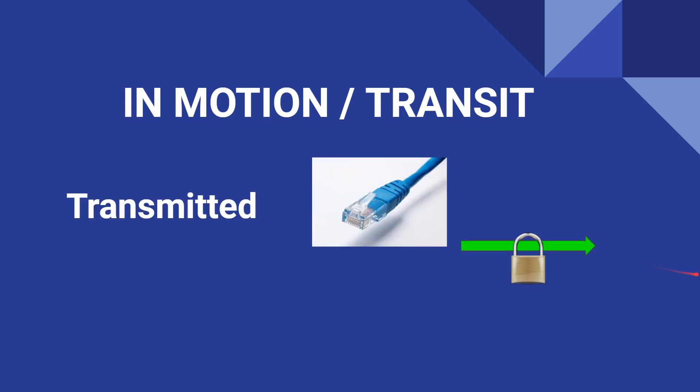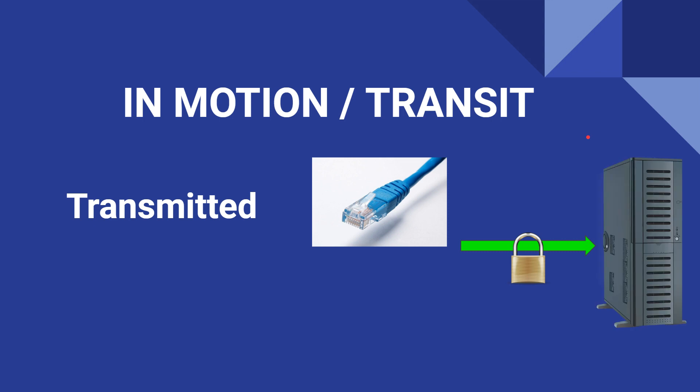Data in motion, or data in transit, is when it's being transmitted across a wire. You definitely want to encrypt. In domain two, it talks about two different types of encryption: end-to-end and link encryption. We'll get into that on this slide here.